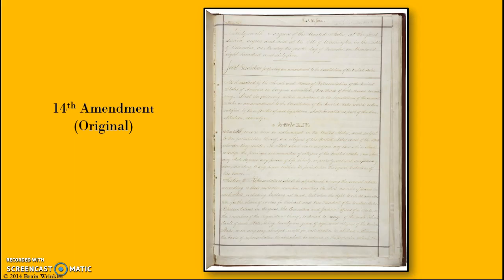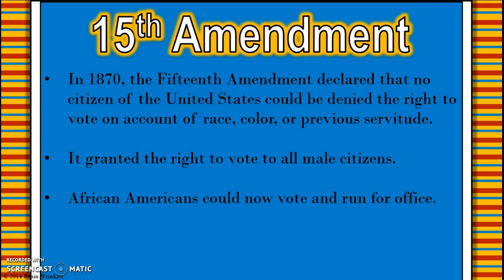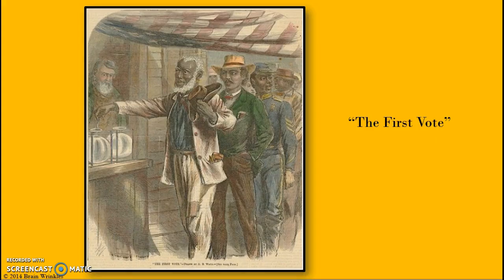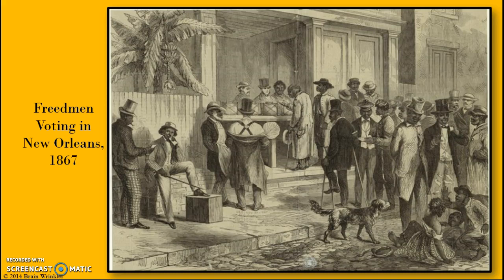Here is the original 14th Amendment. The 15th Amendment declared that no citizen of the United States should be denied the right to vote on account of race, color, or previous servitude. At this time this only applied to males — women's right to vote came later — but now African Americans could vote and run for political office. Here is an image of the first vote and Freedmen voting in New Orleans.